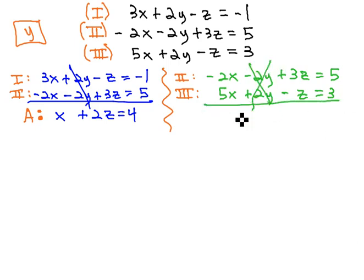The two y's eliminate and we're just left with 3x plus 2z equals 8. We will call this equation B.